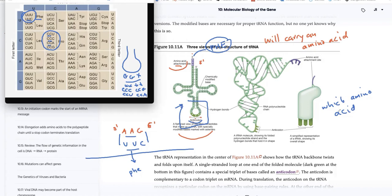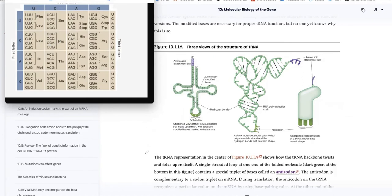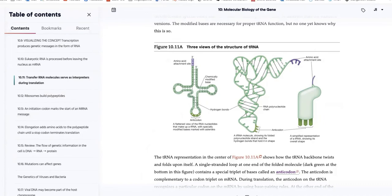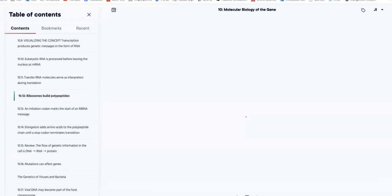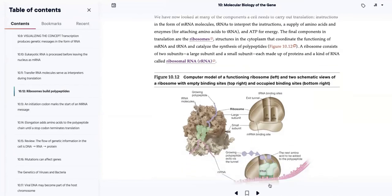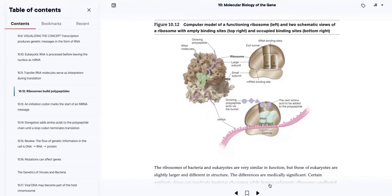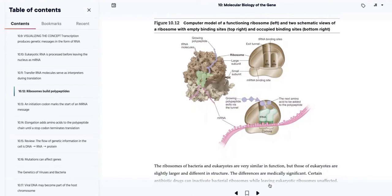This is what a tRNA molecule looks like when it's carrying the amino acid, and that's what we'll be working with when we get to the ribosome. The next thing in our discussion is ribosome structure. Ribosomes build polypeptides, and we're going to be looking at the things that are important in the structure of a ribosome.